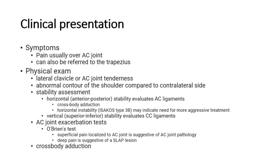Patients will present with pain usually over the AC joint, and the pain can also be referred to the trapezius. On physical exam, there is lateral clavicle or AC joint tenderness, and abnormal contour of the shoulder compared to the contralateral side.